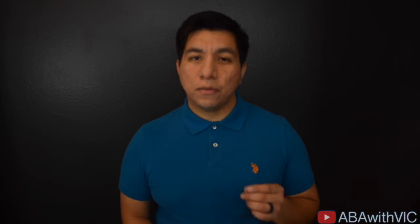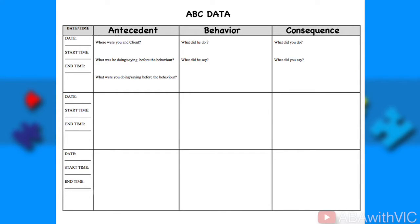Finally, you want to look at the consequence — what happened after the behavior. An ABC data form looks like this. It starts with the antecedent, followed by the behavior, then the consequence. It outlines: what were you and the client doing before the behavior, what were you saying, what did the client do, what did he say, and how did you respond to the behavior?